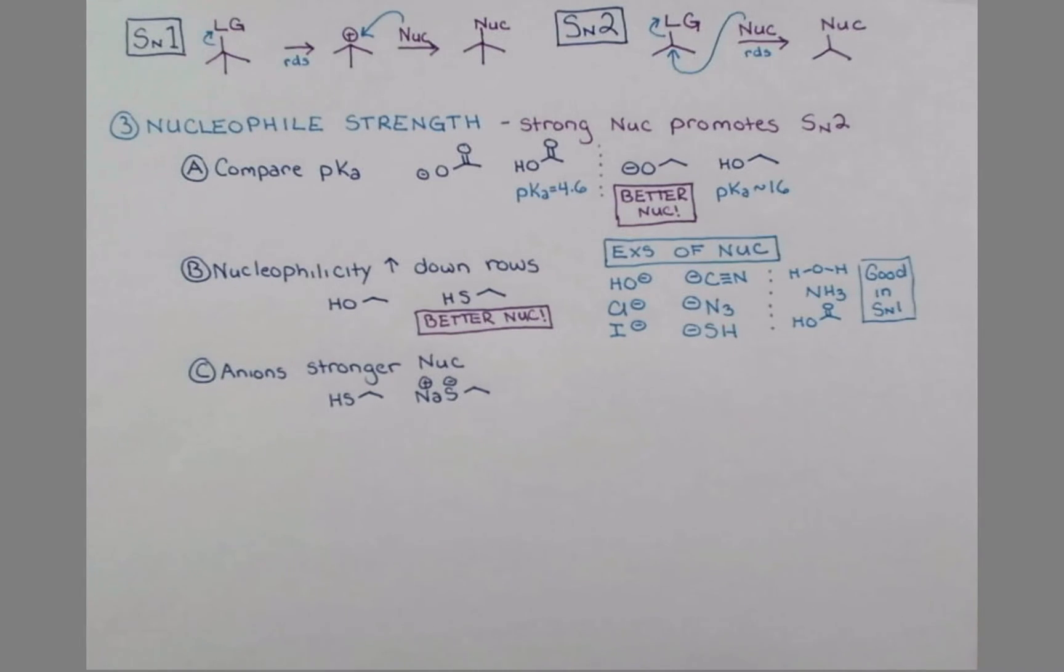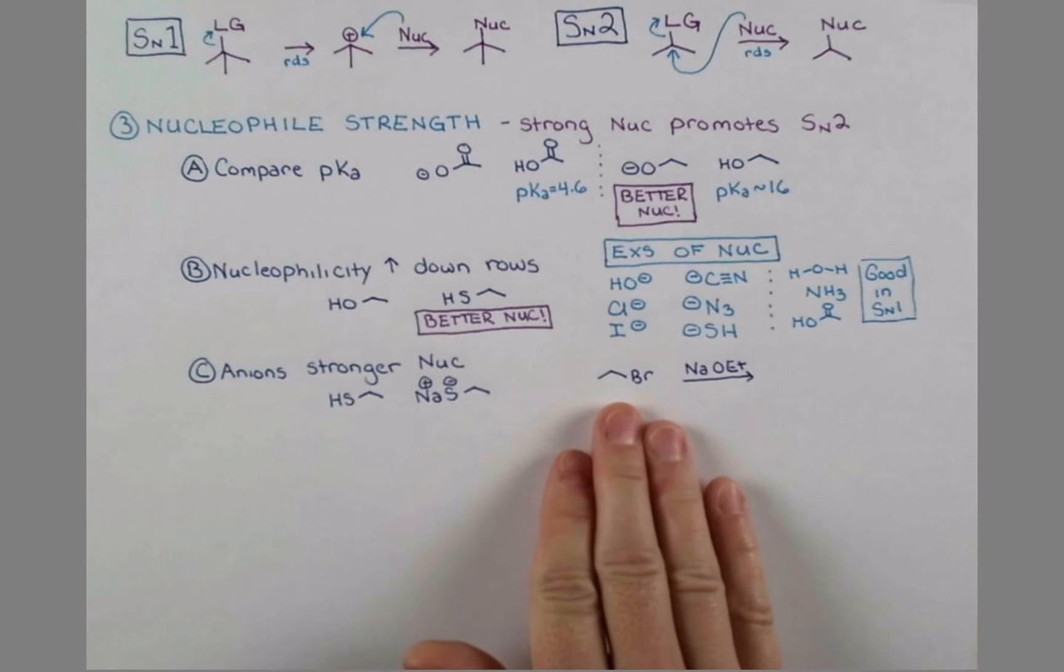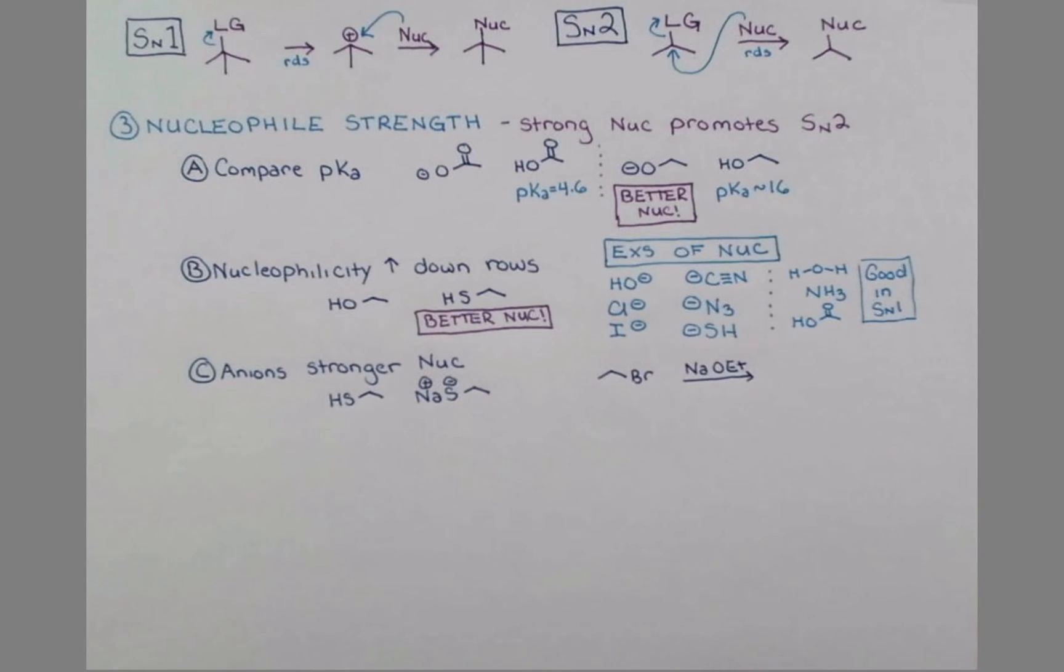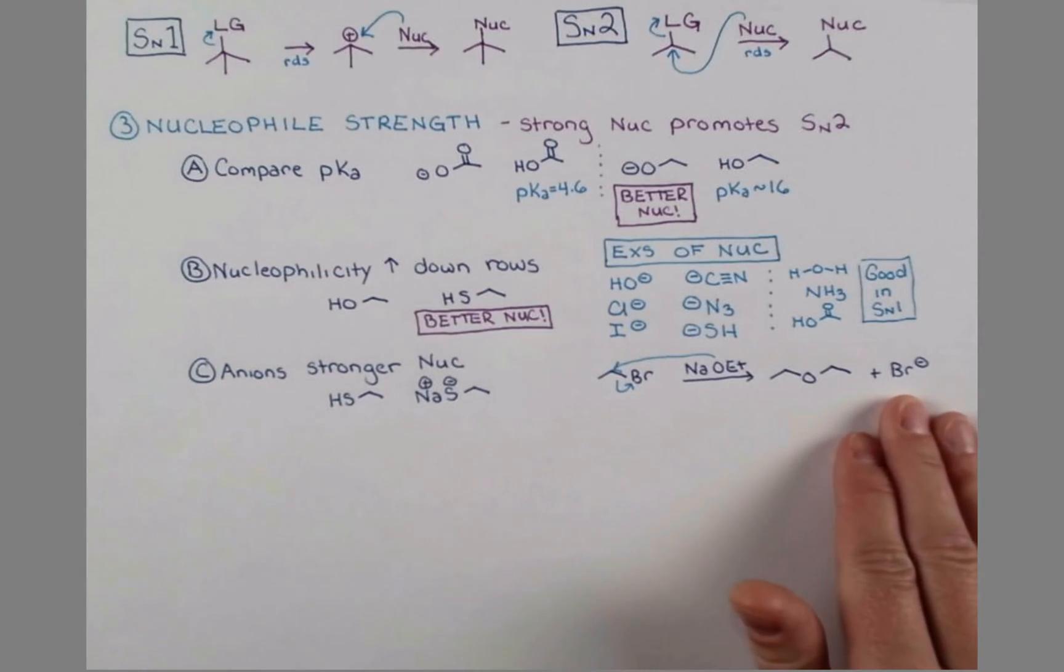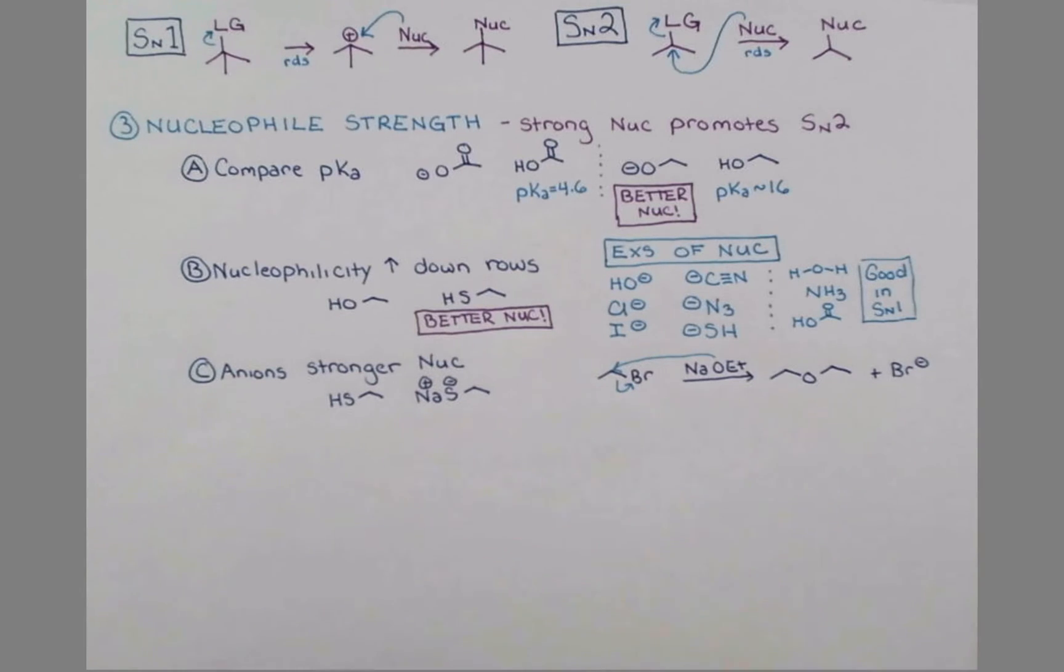Let's look at one example of a strong nucleophile promoting an SN2 reaction. When this primary alkyl halide is treated with sodium ethoxide, we get an SN2 reaction that produces an ether. This reaction is called the Williamson etherification and works very well for primary halides.